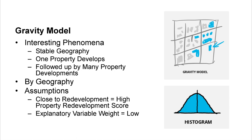Explanatory variable — gravity model: this is the interesting phenomenon where a stable residential neighborhood with no development for 10 years suddenly has one house torn down and rebuilt, and then the next year 10 properties in the same neighborhood all start redeveloping. I've seen this on multiple occasions. I don't have science to prove it, but I believe it should be included in the model. My assumption: if your property is close to a redeveloping property, you'd have a higher property redevelopment score. Explanatory variable weight: probably low.